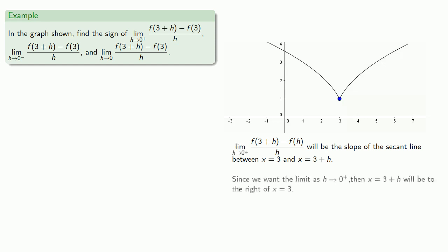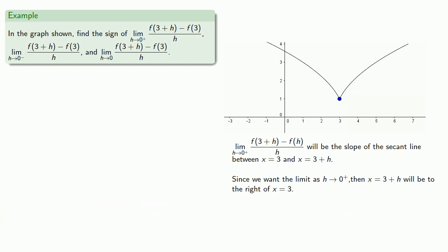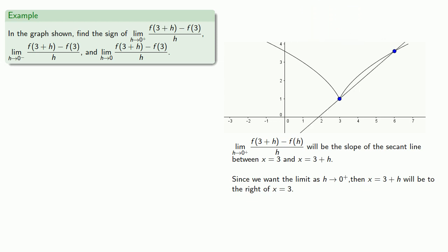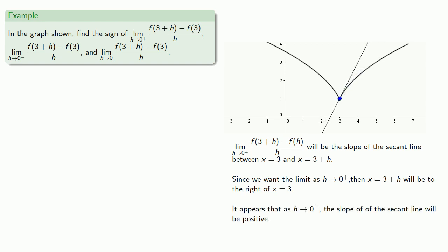Since we want the limit as h goes to 0 from above, x equals 3 plus h will be to the right of x equals 3. So here we have our point at x equals 3, and somewhere off to the right we have our point at x equals 3 plus h. We draw the secant line, and as we let h go to 0, this point on the right comes closer to x equals 3. It appears that as h goes to 0 from above, the slope of the secant line will be positive.